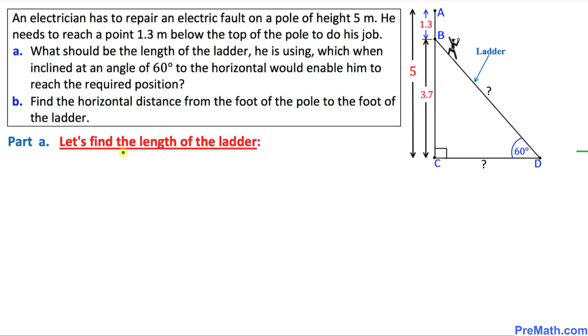Now, let's get started with part A. We are going to calculate the length of this ladder. We are going to be dealing with triangle BCD. And we know that the height of this pole AC is 5 meter. And this electrician is working on this point B. We know that this distance is going to be 3.7 meter if we subtract 1.3 from 5 meters.